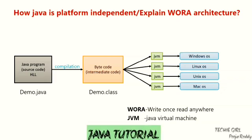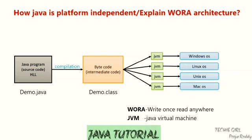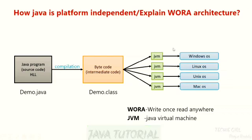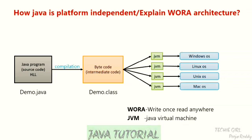Later, if you need to run this Java program on a Linux operating system as well, you need not change any line of the code. You can run it on Linux and expect the same output you got on Windows. Hence, we write the code once and can run it on any operating system — this is called the 'write once, run anywhere' architecture. This is all about platform independence and the overall architecture of Java.